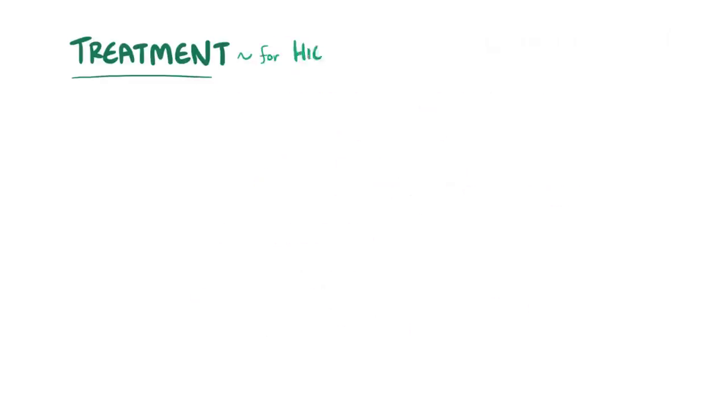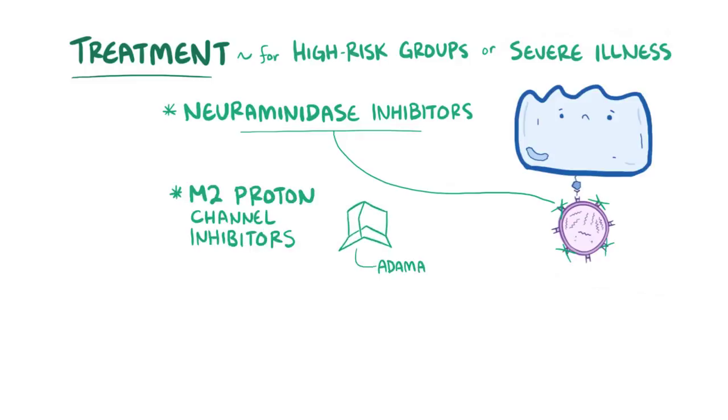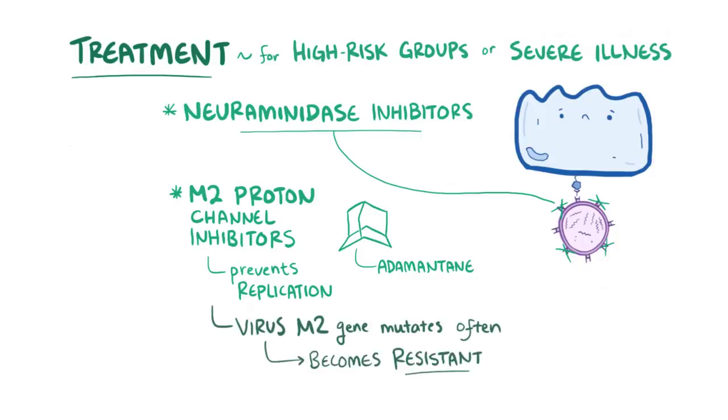Medical treatment for influenza is usually used for high-risk patients or if the illness is severe. There are two classes of medicines. The first is neuraminidase inhibitors, which inhibit neuraminidase and stop the virus from breaking out of the host cells. The second are M2 proton channel inhibitors, which are made of a compound called adamantaine and prevent viruses from replicating inside the host cell. It turns out though that the virus's M2 gene mutates frequently, which allows it to become resistant to the M2 proton channel inhibitors.